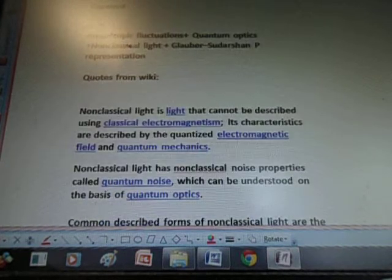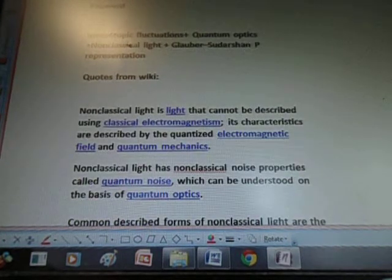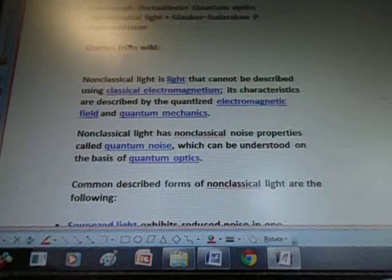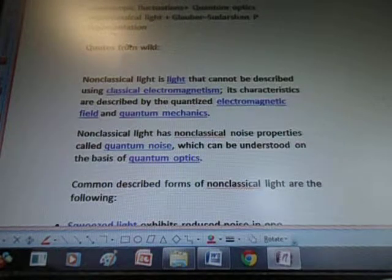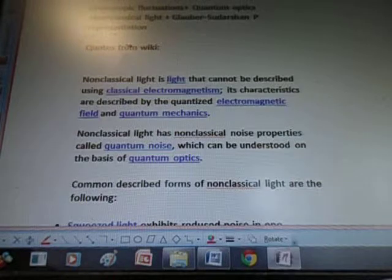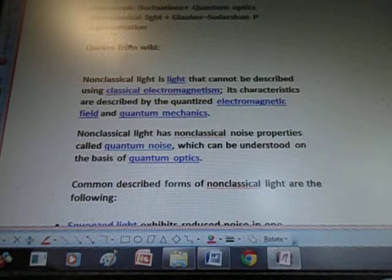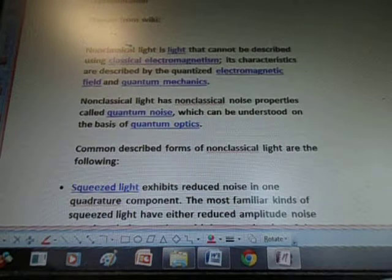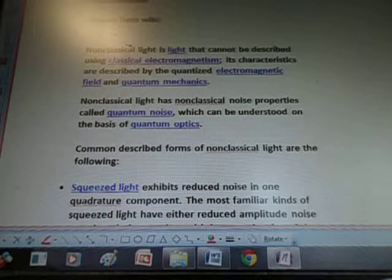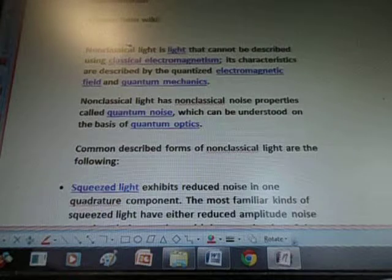Quotes from Wikipedia. Non-classical light is light that cannot be described using classical electromagnetism. Its characteristics are described by the quantized electromagnetic field in quantum mechanics. Non-classical light has non-classical noise properties, called quantum noise, which can be understood on the basis of quantum optics.